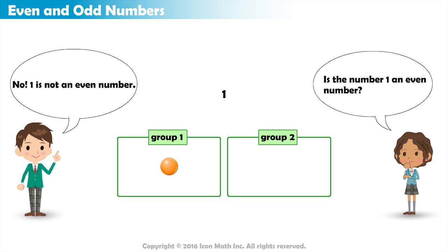So, 1 is not an even number. It is called an odd number, because we can't split it in half or share it among two groups.